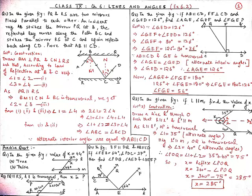Now we have to find angle FGE. By linear pair, angle AGE plus angle FGE is equal to 180 degrees. Since angle AGE is equal to 126 degrees, we get 126 plus angle FGE equals 180 degrees. Therefore, angle FGE is equal to 180 minus 126, which is 54 degrees.